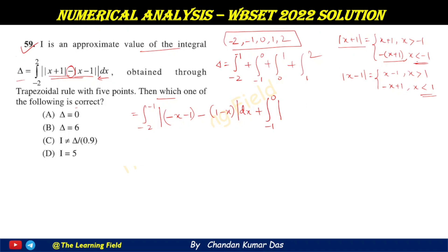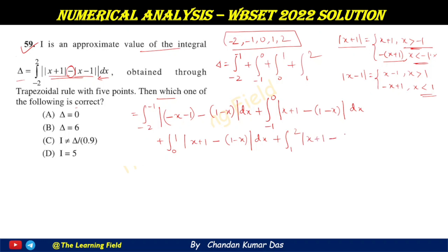Continuing: on −1 to 0, the integrand becomes (x + 1)(1 − x) dx. On 0 to 1, x > −1 gives x + 1 for the first function, and x < 1 gives 1 − x for the second, so the integrand is (x + 1)(1 − x) dx. On 1 to 2, x > −1 gives x + 1 and x > 1 gives x − 1, so the integrand is (x + 1)(x − 1) dx.